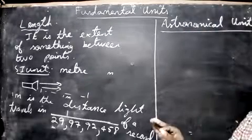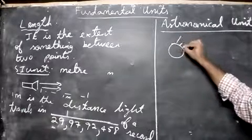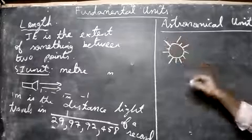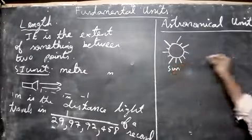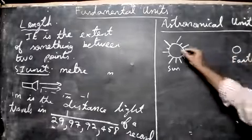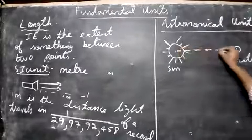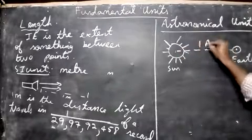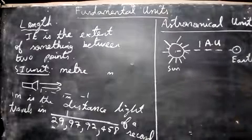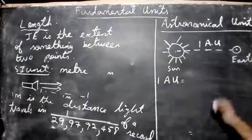the center of the Sun and center of the Earth. I'll draw the Sun here, for example. Let this be the Sun and let this be the Earth. This distance, we call it as one astronomical unit. It's the distance between the center of the Sun and center of the Earth.